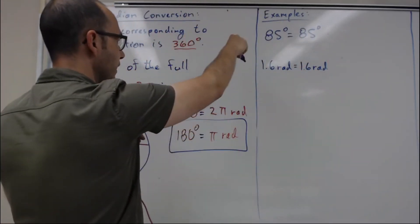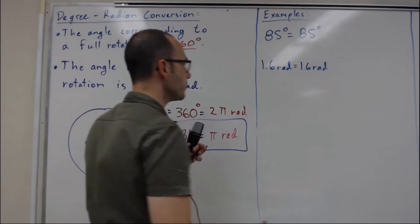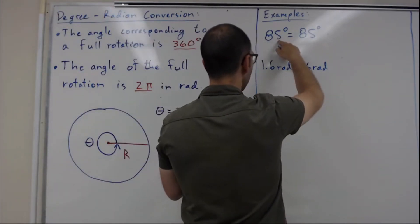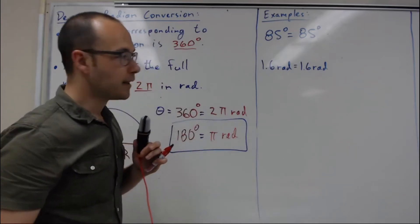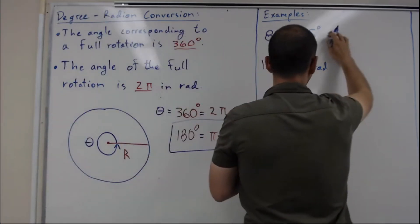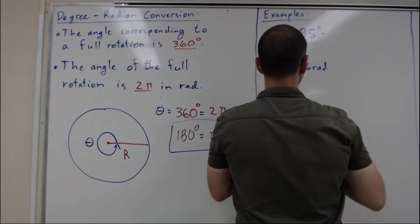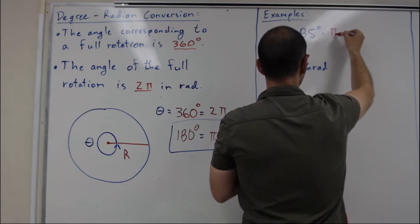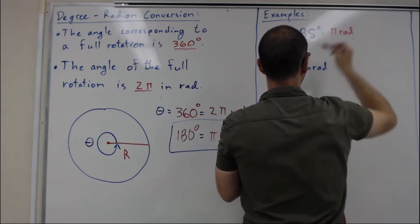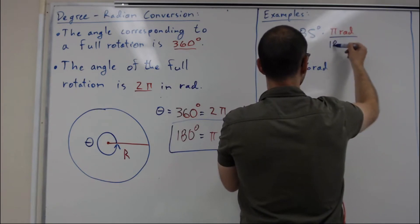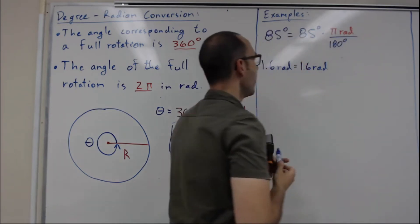Here are my two examples. I'm going to start with 85 degrees that I will convert into radians. I'm going to multiply that by my conversion factor: π radians over 180 degrees.